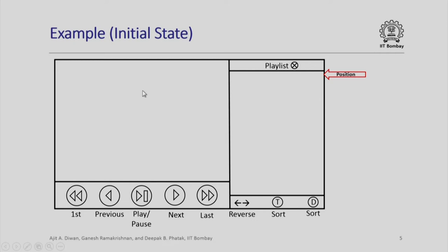We start with the initial state where we have an internal pointer pointing to the current position in the playlist. When the playlist is empty, there is nothing there and the position is at a default point. This is an implied position — the playlist itself does not contain this; it will be a part of our program which we shall see later.